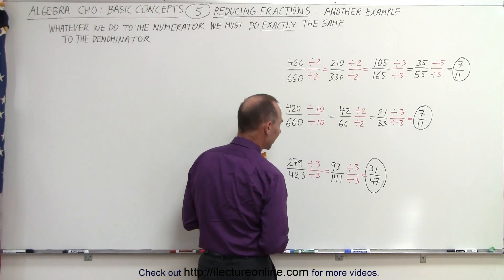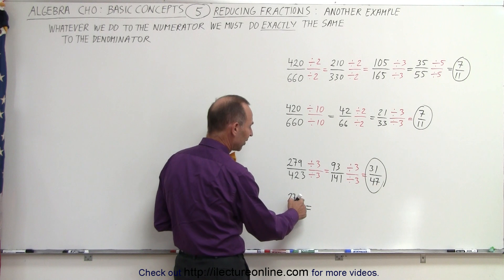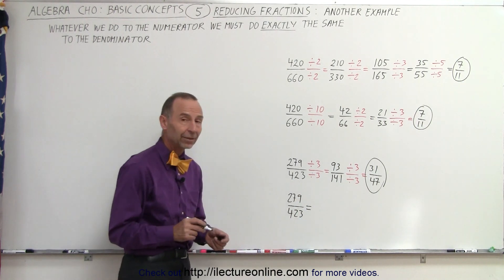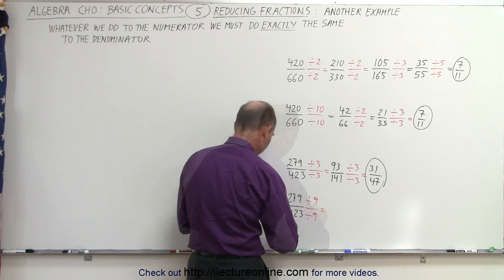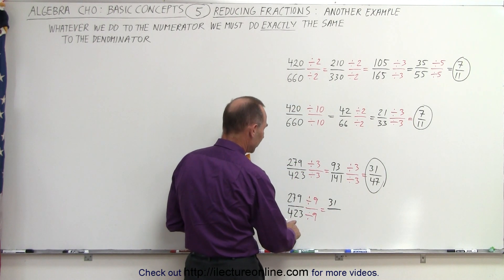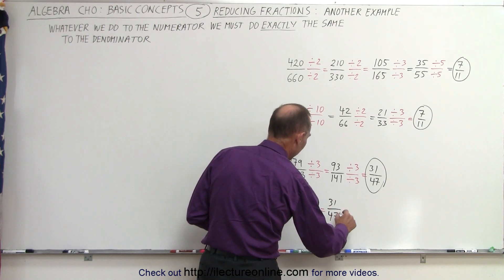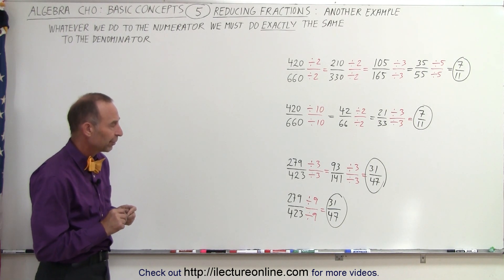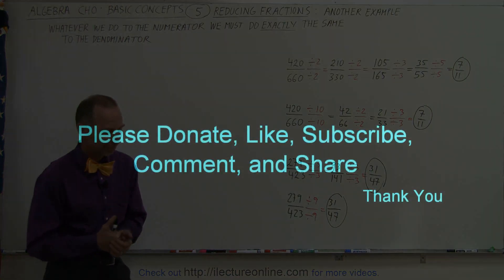Could we have jumped straight to dividing by 9? Let's check: for 279, the digits add up to 18, which is divisible by 9. For 423, the digits add up to 9, which is also divisible by 9. So we could have gone straight to dividing both numerator and denominator by 9. 279 divided by 9 is 31, and 423 divided by 9 is 47 — the exact same result. So sometimes we can be a little more clever and check for divisibility by 9 instead of dividing by 3 twice, saving ourselves some work. And that's how it's done.